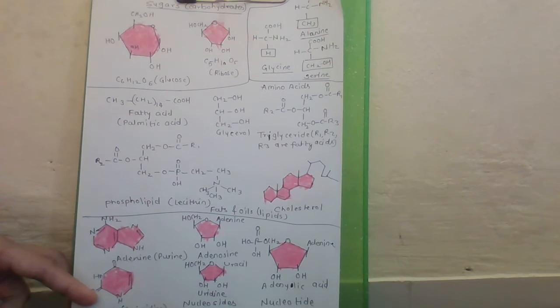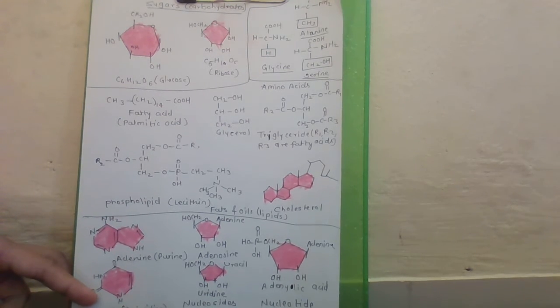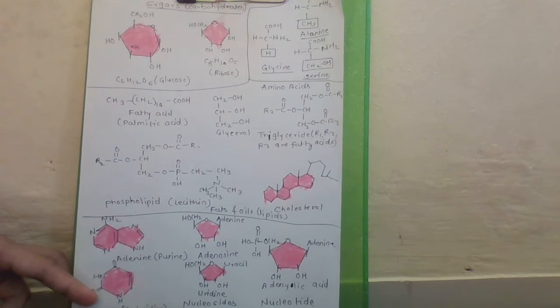Examples of acids are adenylic acid, thymidylic acid, guanylic acid, uridylic acid, cytidylic acid. These are nucleotides.